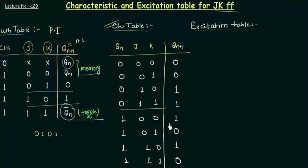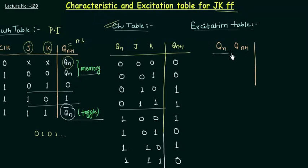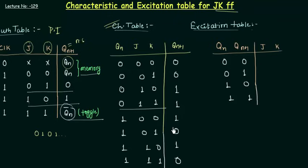After the characteristic table, we are going to have our excitation table. This table is deduced from the characteristic table. In this we have two inputs — the present state Qn and the next state Qn+1 — and two outputs, which are the inputs to the flip-flop: J and K. With two inputs there are four possible combinations: 0→0, 0→1, 1→0, and 1→1. Using the characteristic table, we will find the values for J and K.